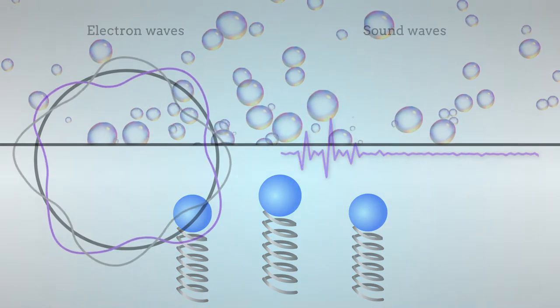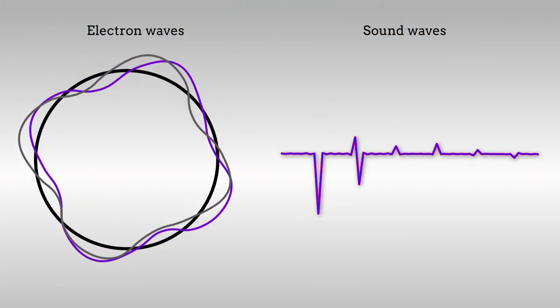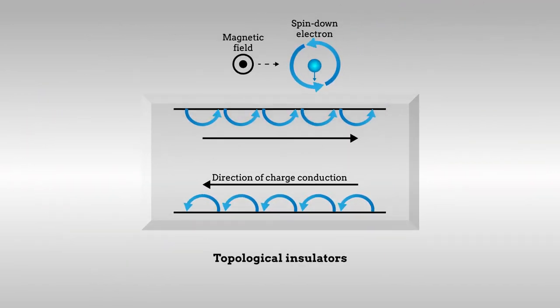In this spirit of simplification, researchers recently exploited the analogy between electron waves and sound waves to design an acoustic model of exotic materials called topological insulators.